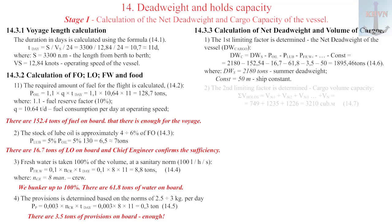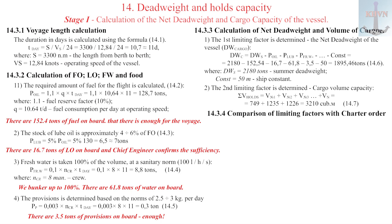2. The second limiting factor is determined, cargo capacity by the total volume of cargo holds and tween decks, formula 14.6. The total volume of holds is 3210 cubic meters. 14.3.4 comparison of limiting factors with charter order. 1. Compare the net dead weight with the cargo weight of order task and it must be less than or the same.